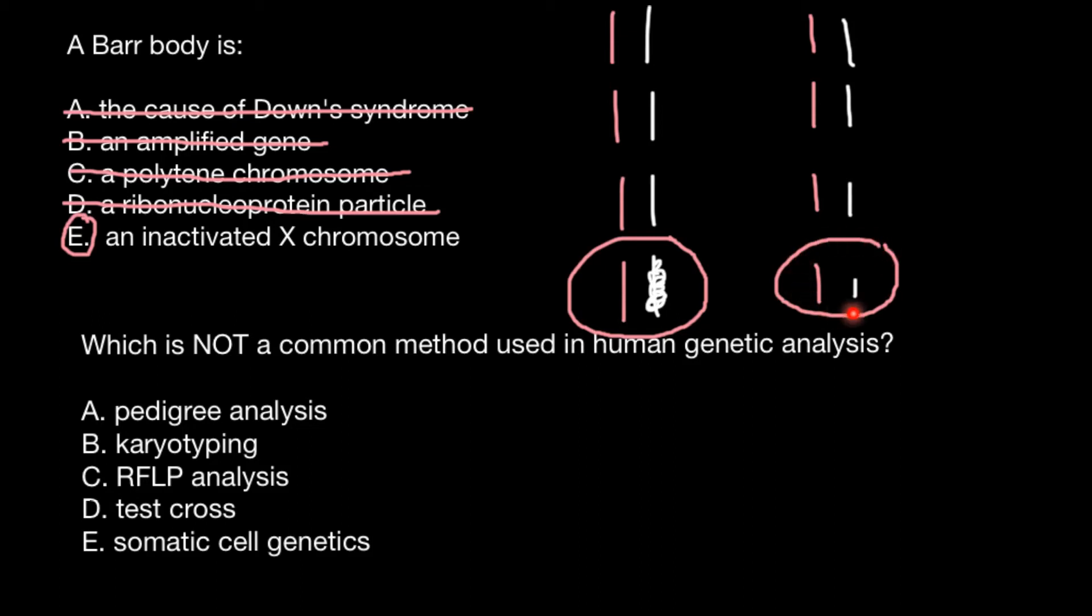But we would be able to see this condensed chromosome that we call Barr body, and we wouldn't be able to see such a formation in the cells of the male, in somatic cells of the male. Of course, Barr body in different cells would be made with different chromosomes. In some cells paternal X chromosome would be turned off, and in other cells maternal X chromosome would be turned off.